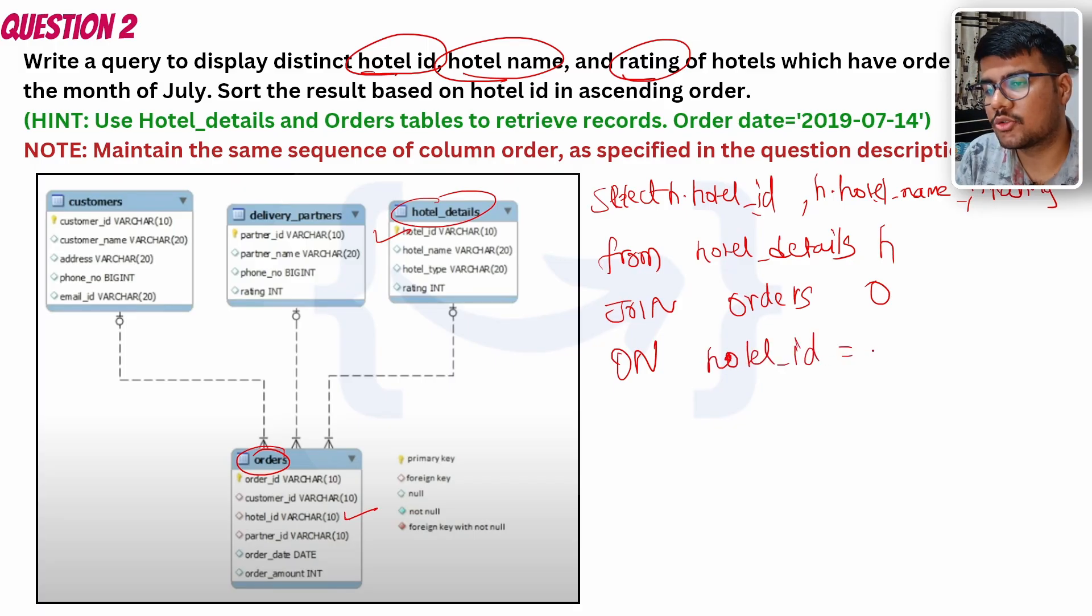I will write it as orders and I will mark it as 'o', then ON. Simple - which condition you want to join? Simple - h.hotel_id equals to o.hotel_id. Now here it would be o.hotel_id and h.hotel_id, and it has been connected. If it is connected, then you just need to write WHERE the name - the month should be given to July. Now what you can do is, as you are not able to see the question properly, they have mentioned hint - use hotel_details and order table to retrieve data order_date. So this kind of thing has been provided.